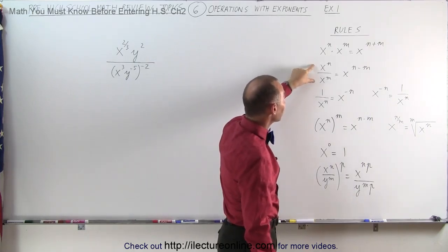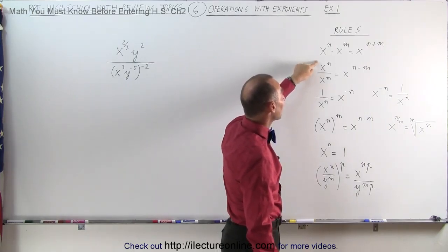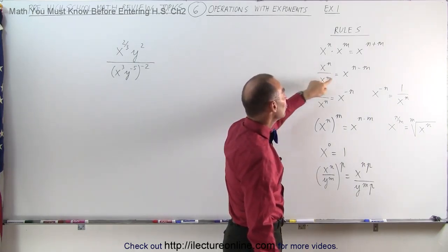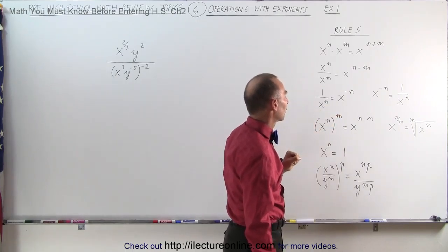But when you divide, x to the n divided by x to the m, then you subtract the exponents.